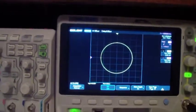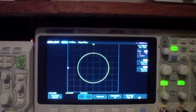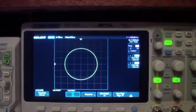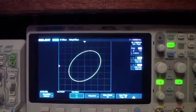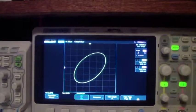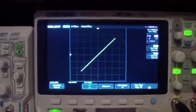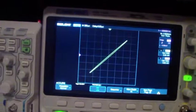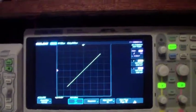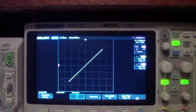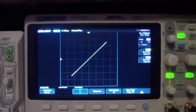Now as I drop the phase by 10 degrees per step, you'll notice that the circle becomes an ellipse, and when the two signals are exactly in phase, it becomes a straight line at 45 degrees.